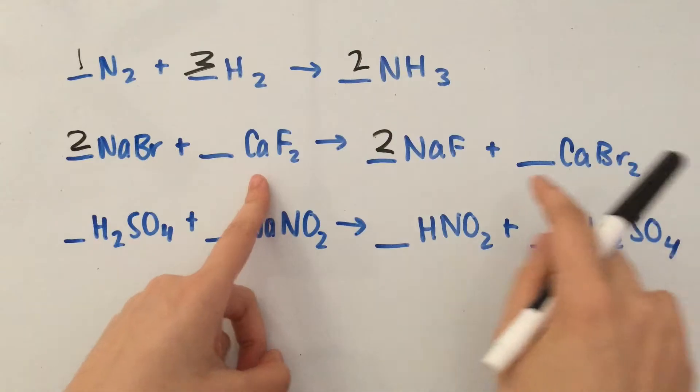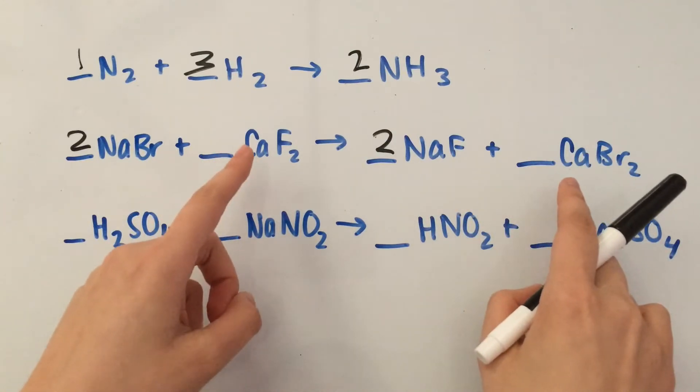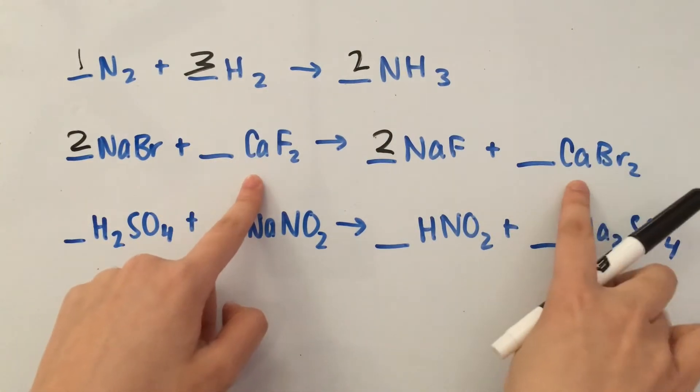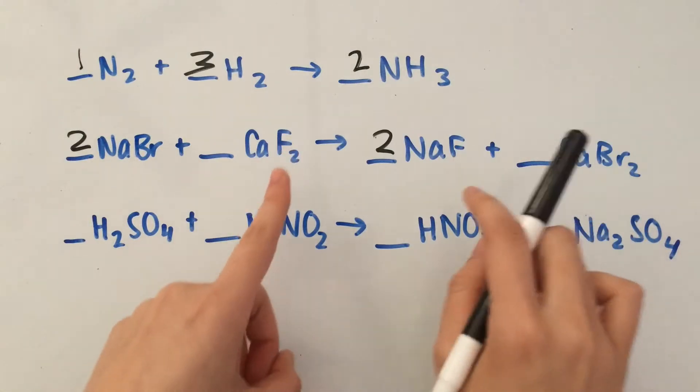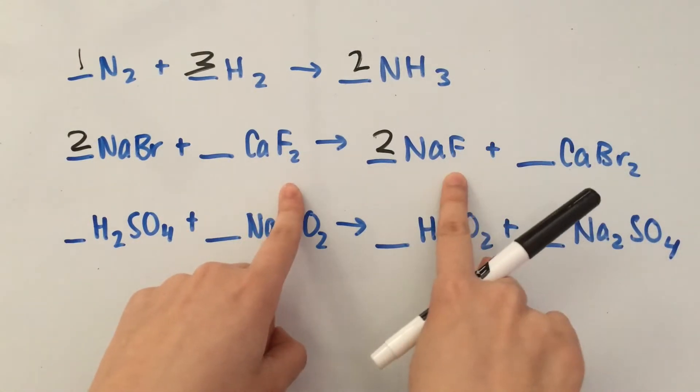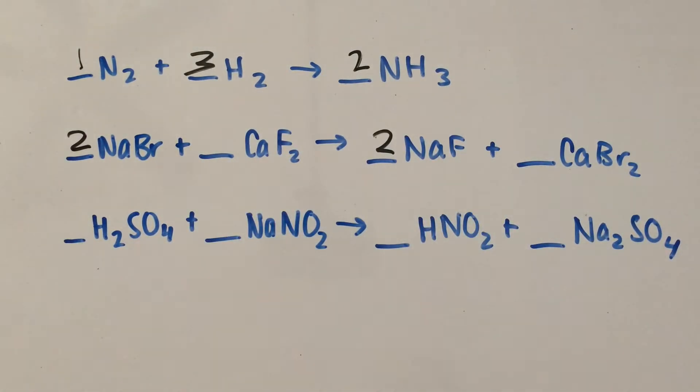Next is Ca, calcium. We have one calcium, one calcium - we're good. Next is F, two F's, two F's - we're good. So it's two, one, two, one.